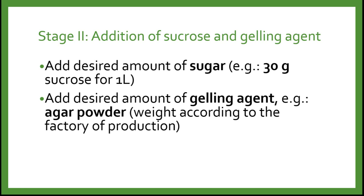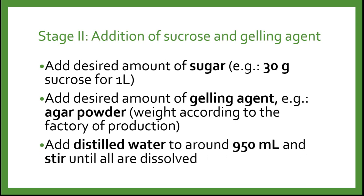Next, we add the desired amount of gelling agent such as agar powder, following the manufacturer's instructions on the bottle. For home use, you can also use agar powder from the grocery. After that, we top up the volume with distilled water to around 950 ml and stir until all are dissolved, if preparing 1 liter of media. I always leave a 50 ml buffer — so for 1 liter I top up to 950 ml, and for 500 ml I top up to 450 ml — because we still need to do pH measurement and adjustment.